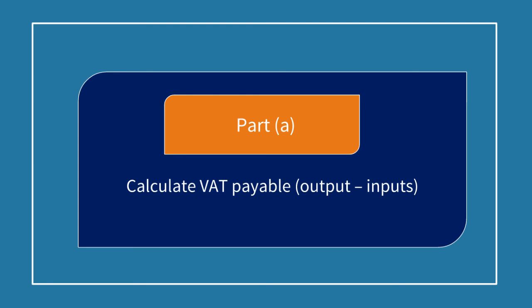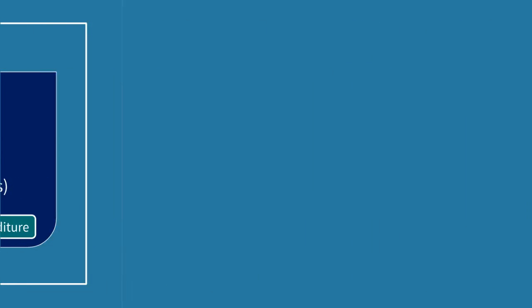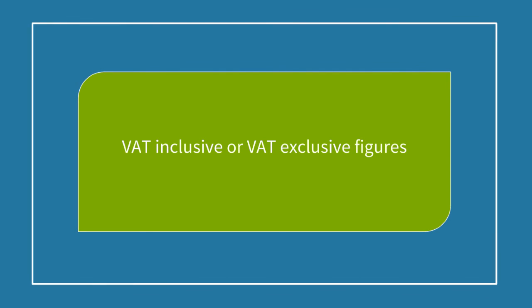In part A we quickly saw that we had to calculate VAT by taking outputs less inputs. Output VAT is on sales and input VAT is on expenditure. Remember to look towards the end of the question to find out if the amounts are VAT-inclusive (120%) or VAT-exclusive (100%). In this case the amounts were VAT-inclusive, so to get the VAT we took the gross amount and multiplied by 20 divided by 120, which is the same as taking one sixth.